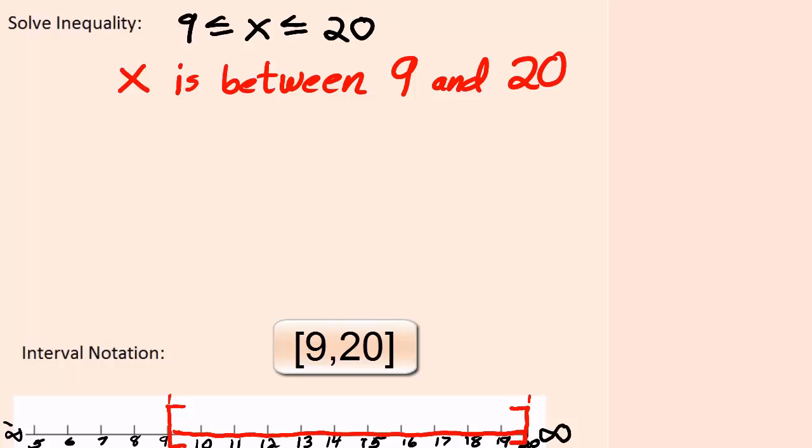My interval notation will look a lot like the graph with a bracket on the left and then 9 on the left, comma, 20 on the right and then a bracket on the right. This is called a three-part interval or a three-part inequality.